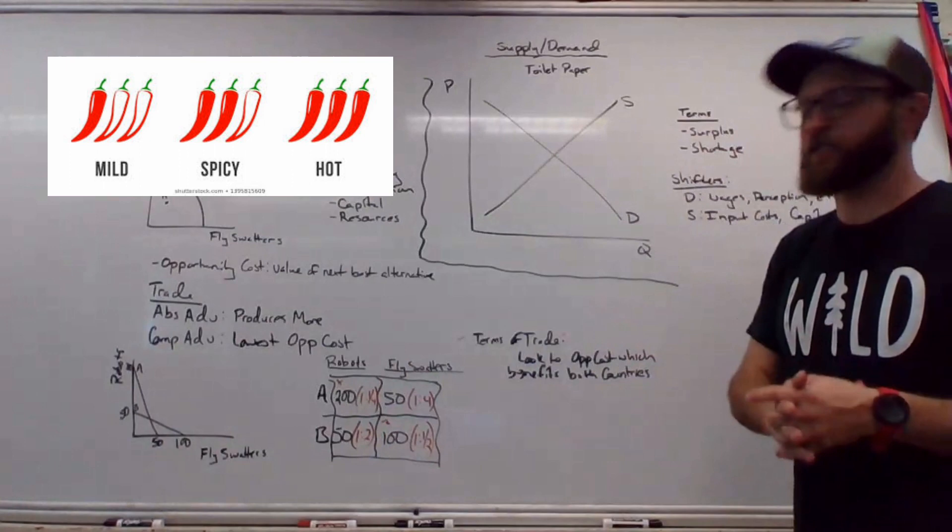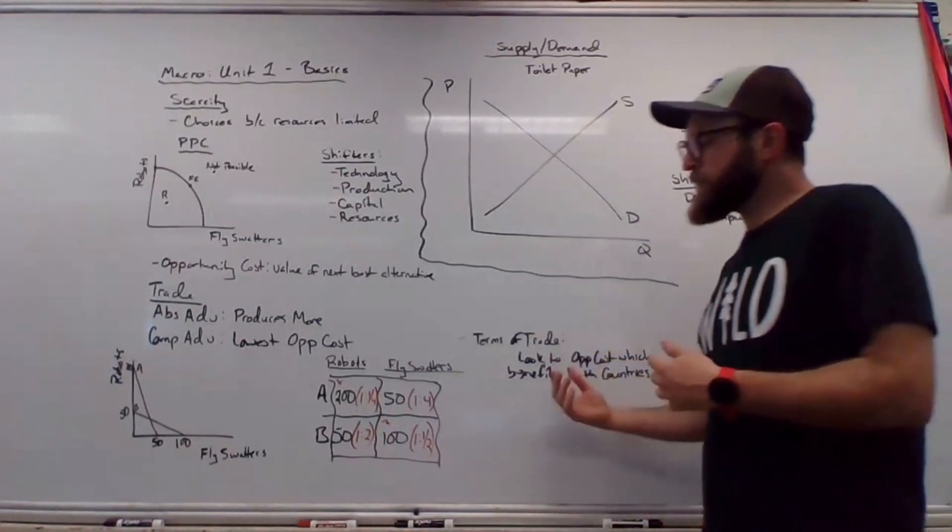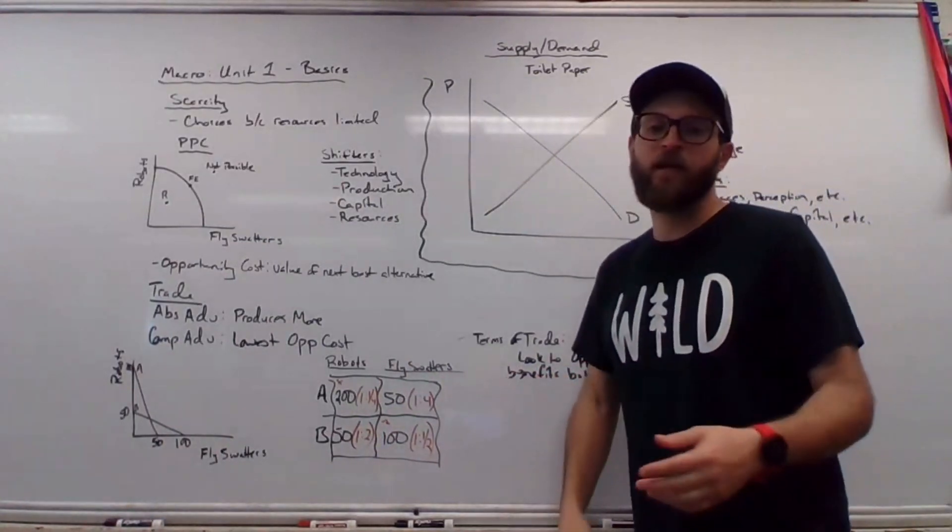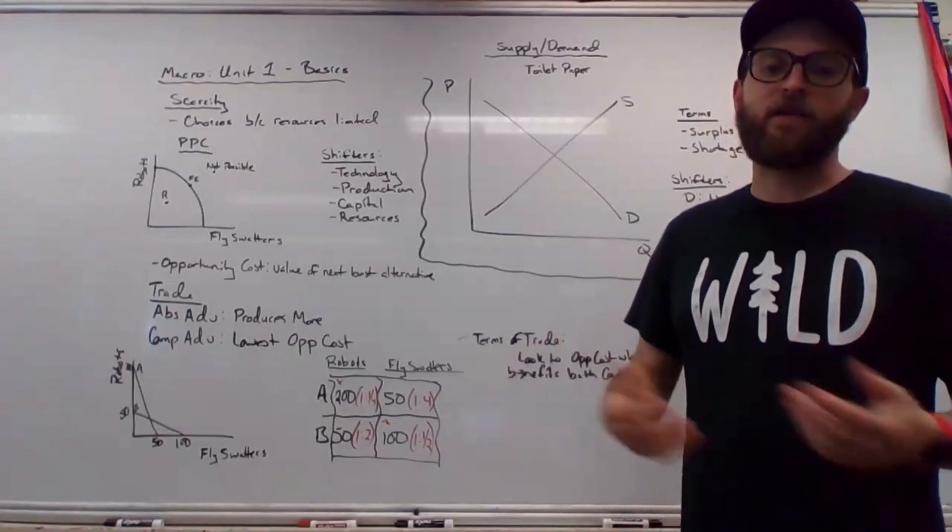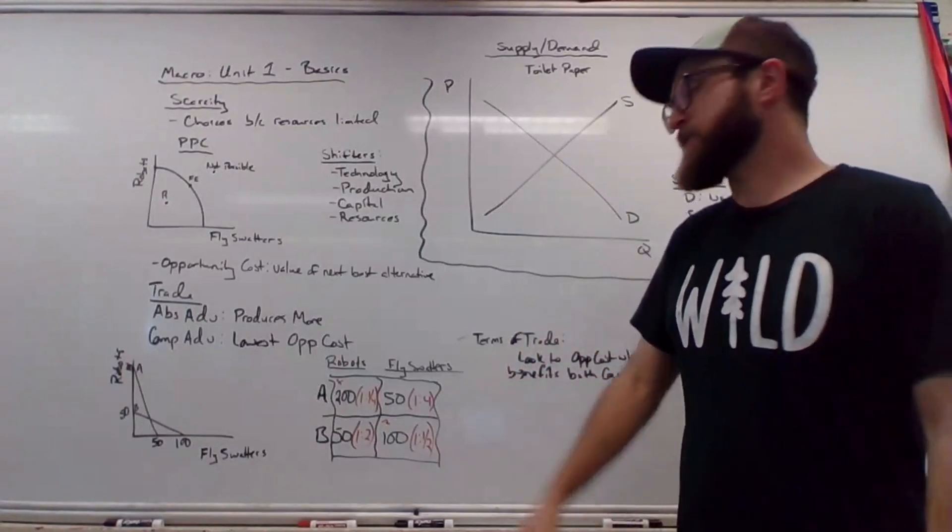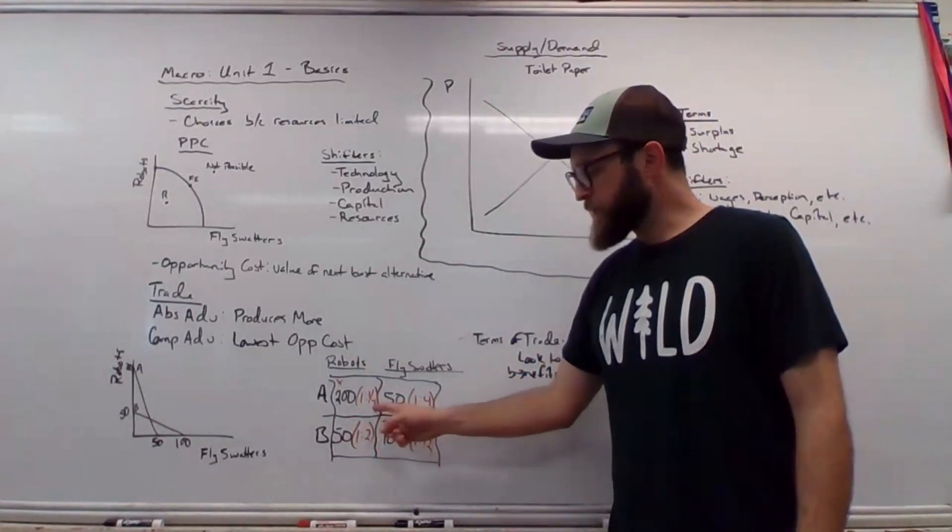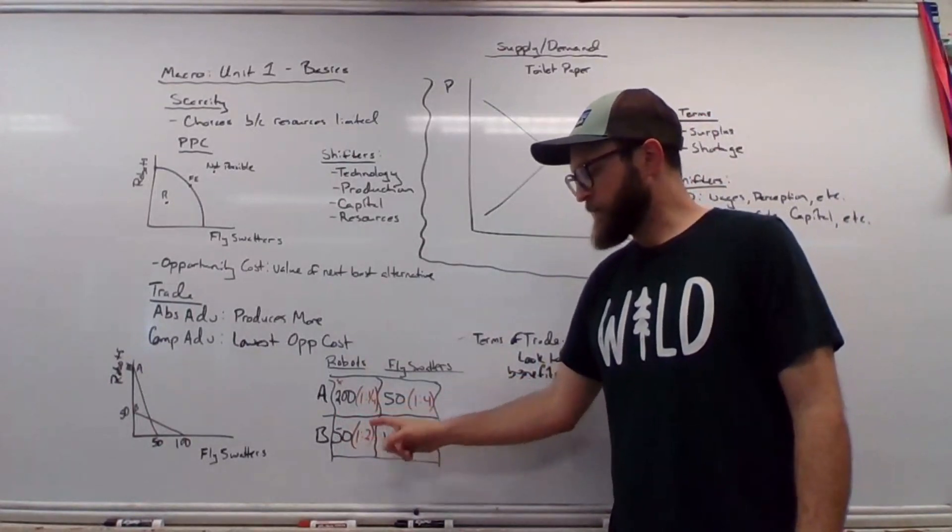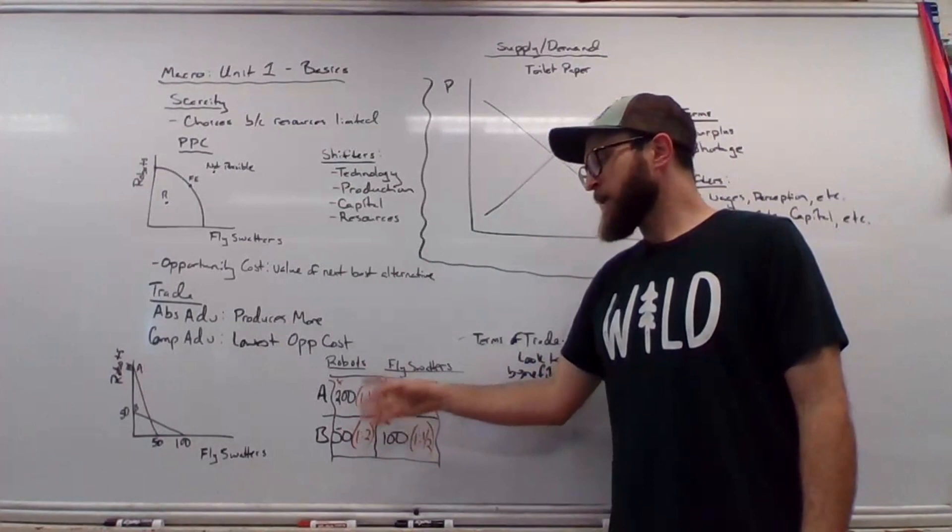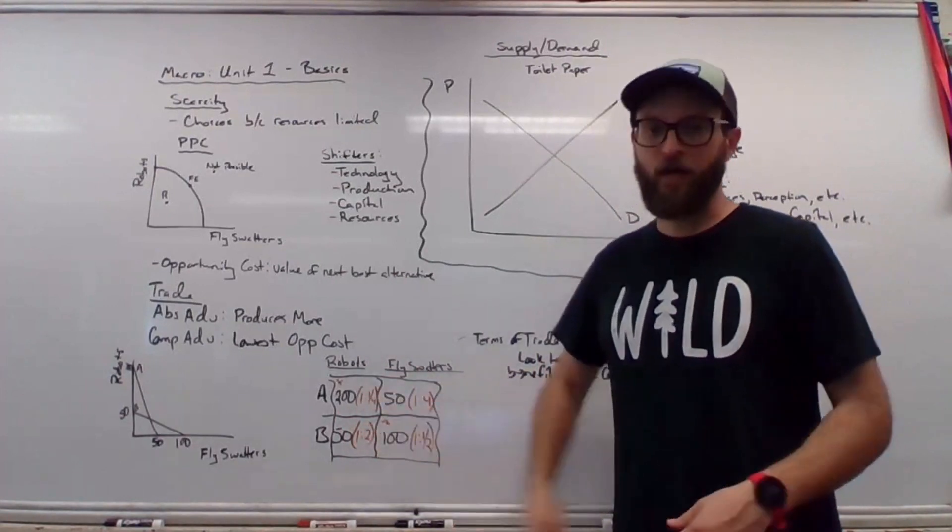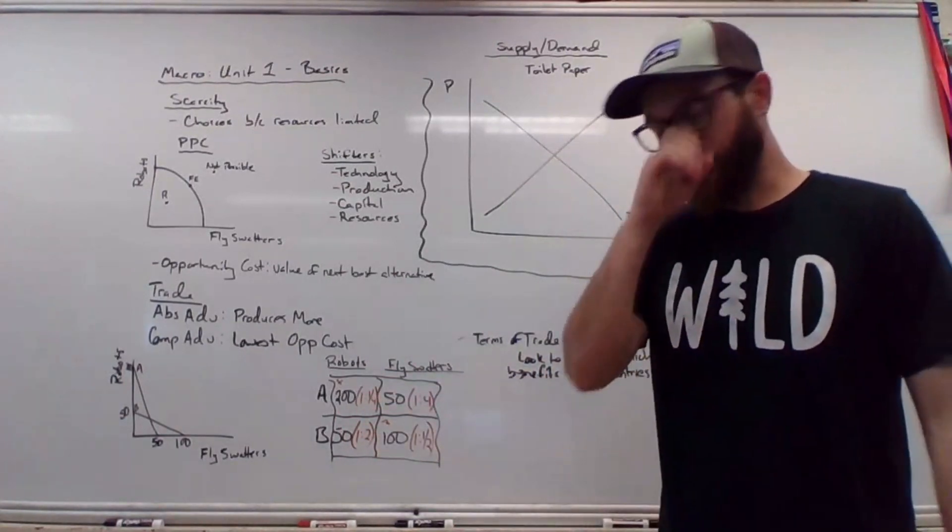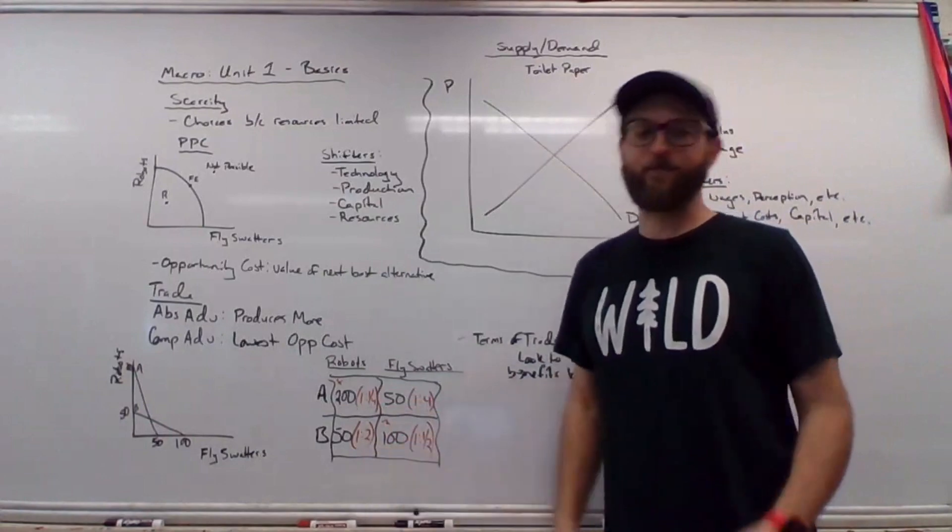The most spicy version of this question can be terms of trade. To figure that out, you ask yourself, if they want to know for one robot how many fly swatters would both countries accept? You go to the one robot category, and then you pick a number of fly swatters between this number and this number. So for example, in this scenario, both countries would accept for one robot one fly swatter, because one fly swatter is between one-fourth and two.